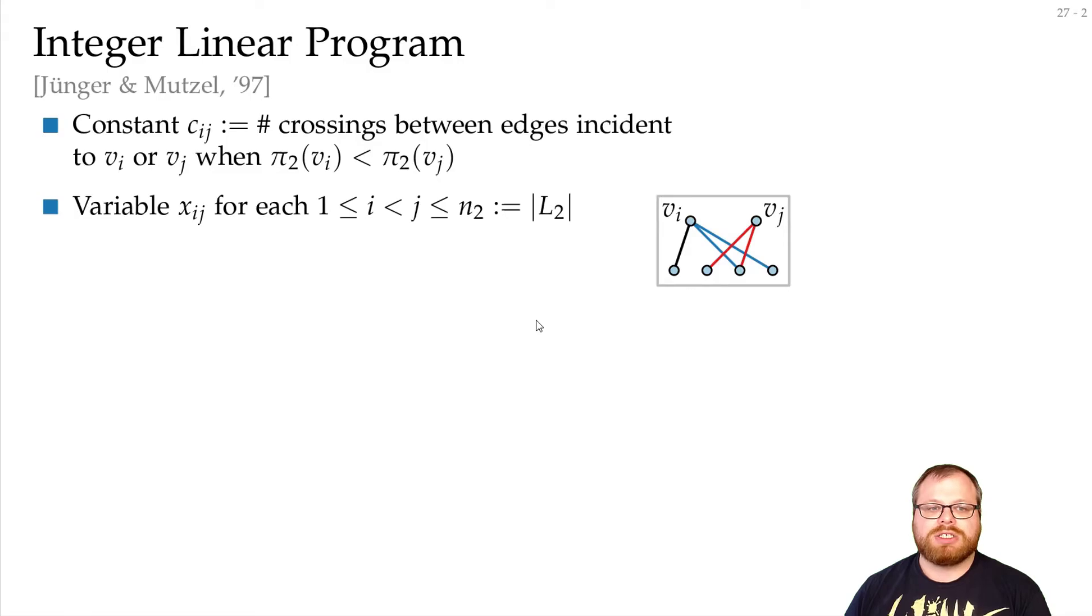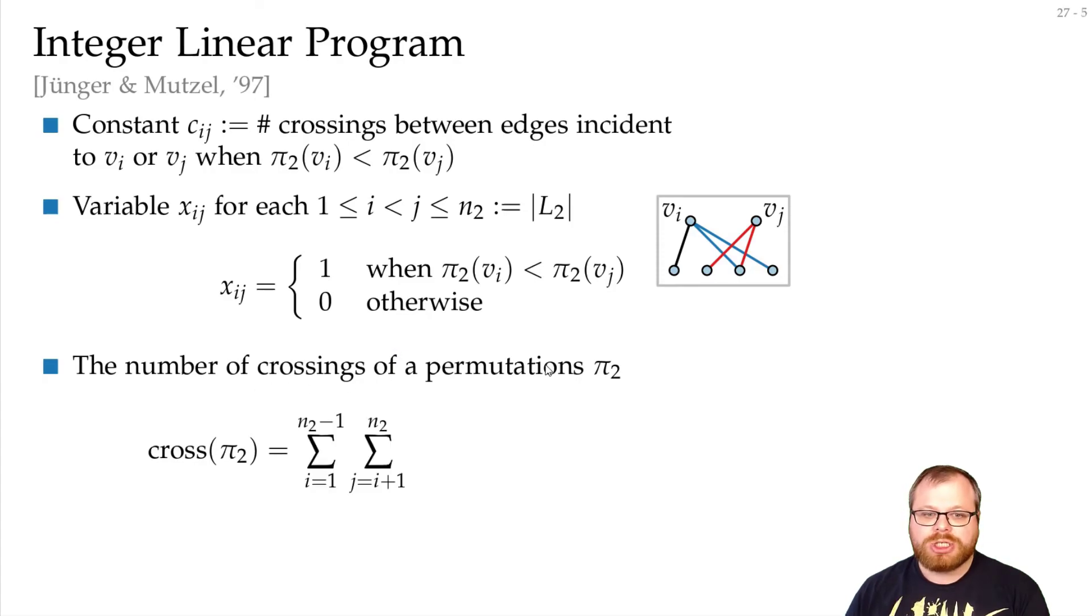With these constants, we formulate an integer linear program. For every pair of vertices, we have a variable that tells us does i lie to the left of j. Then we can count the number of crossings in total. The number of crossings by permutation is: we look at all pairs of vertices i and j, and if i lies to the left of j, then we have Cij crossings, otherwise we have Cji. To make it simpler, we always count those Cji and remove them if Xij is 1. This looks a bit weird, but if we look at this whole function, everything here is a constant, so this doesn't matter.